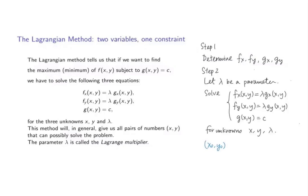Next, we introduce a parameter which we call lambda and solve the following simultaneous equations for three unknowns x, y, and lambda. It is known that if there is a maximum or minimum to our optimization problem, then the point at which it occurs, which is at the point (x0, y0) together with a value of lambda, will satisfy this simultaneous equation.